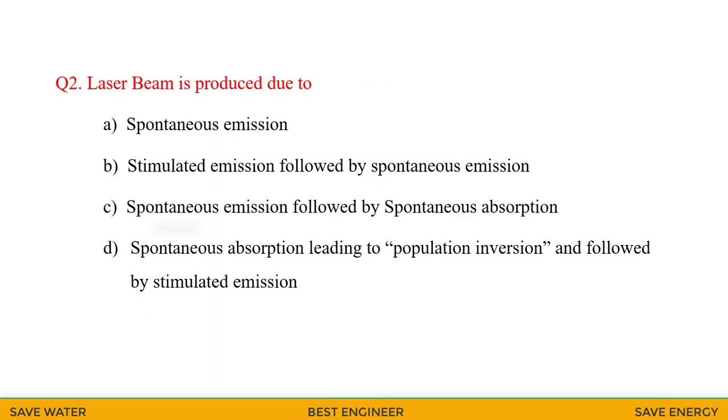Question 2. Laser beam is produced due to: spontaneous emission, stimulated emission followed by spontaneous emission, spontaneous emission followed by spontaneous absorption, or spontaneous absorption leading to population inversion and followed by stimulated emission. Due to the population inversion, the electrons are emitted from the higher level of energy to the lower level of energy. This way the laser is produced.